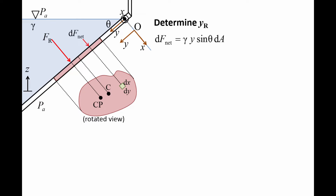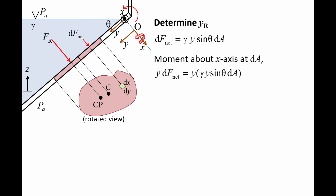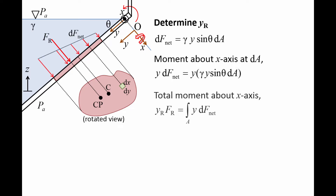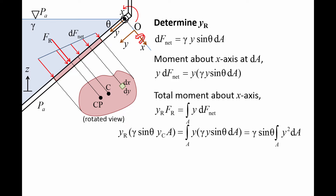The net hydrostatic pressure force at some small area DA is gamma times Y sin theta times DA. The moment this force produces about the x-axis is the moment arm Y times DF net. Integrating over the entire surface gives us the total moment produced by the hydrostatic pressure force. YR is the moment arm needed for the resultant force FR to produce the same moment as this integral. In other words, the resultant force FR and the center of pressure location YR produce an equivalent moment on the wall as the original pressure field.